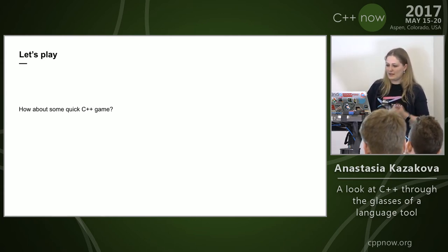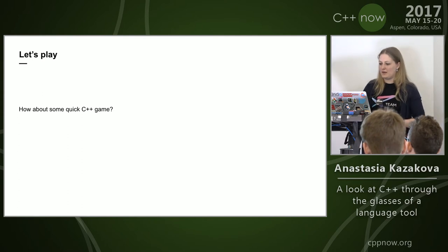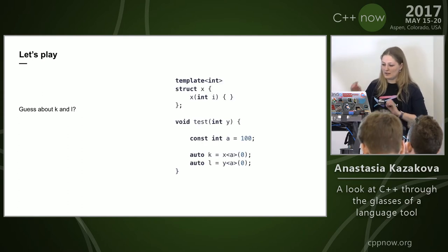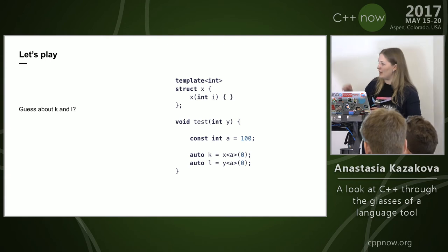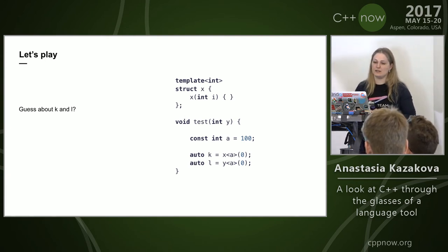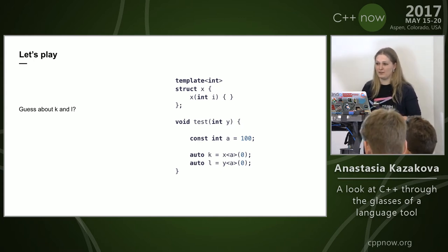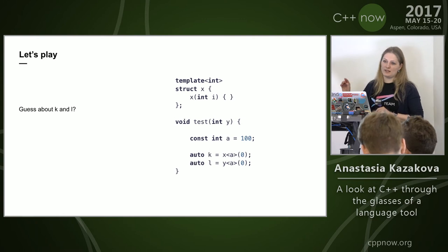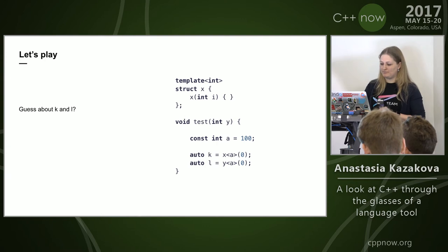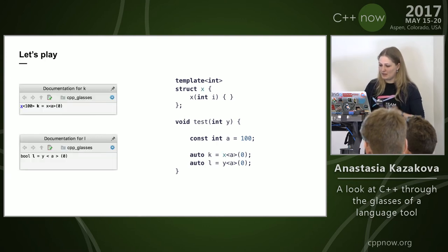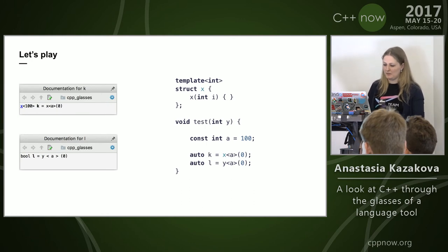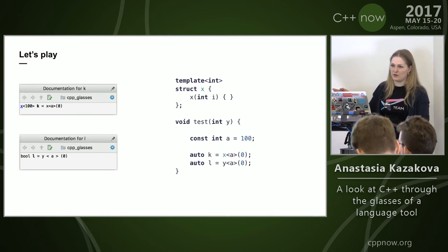Before we start, let's play a quick C++ game. Here's some code, and at the end of the test function there are two lines that look nearly the same — but they are different. The first line is a template and the second line is a binary expression.